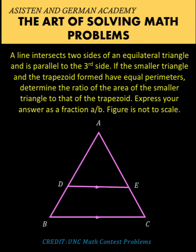We let the length of segment AD be X, the length of segment DB be Y, and since our triangle is equilateral, segment BC is also X plus Y.